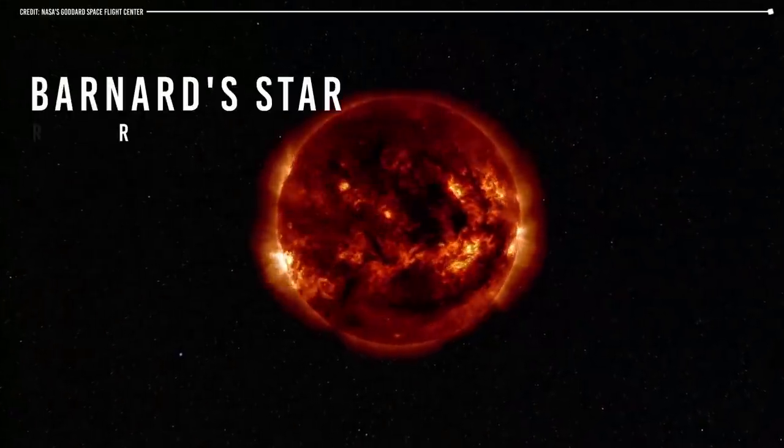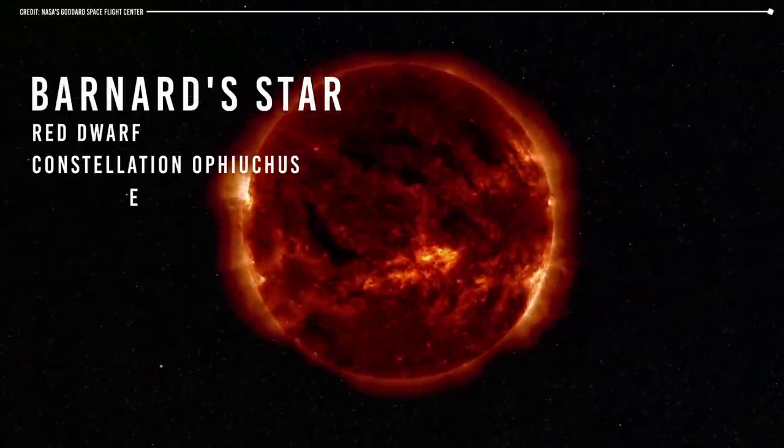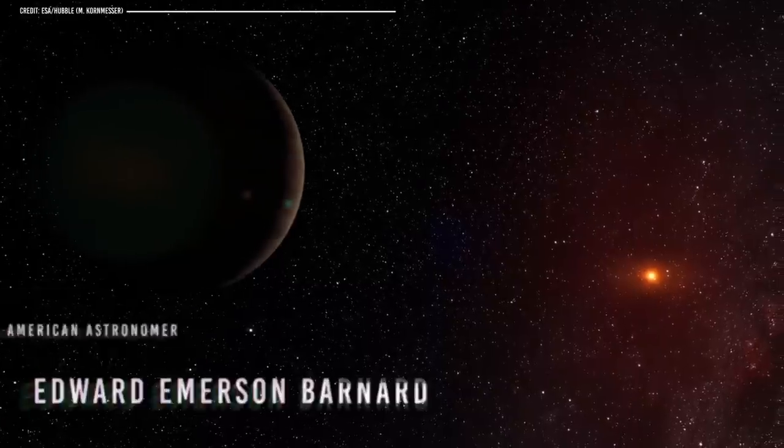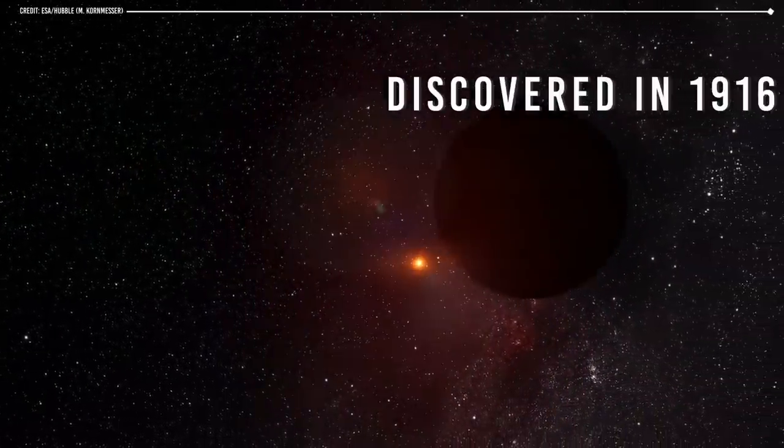Barnard's star is a red dwarf star located in the constellation Ophiuchus, approximately six light-years away from our solar system. It's named after the American astronomer Edward Emerson Barnard, who discovered its high proper motion in 1916.